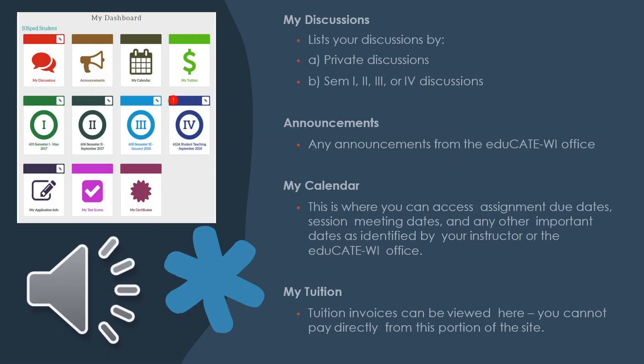My Dashboard lists 11 icons. My Discussions breaks down discussions by private discussions or your weekly discussion posts with your instructor and cohort. Announcements are from the home office. My Calendar is where you can access assignments due, session meeting dates, and other important dates as identified by your instructor or the Educate office.